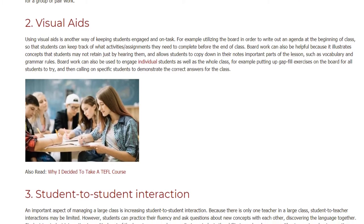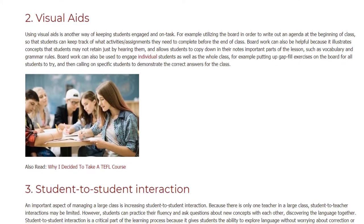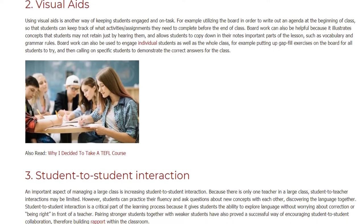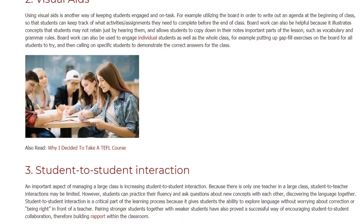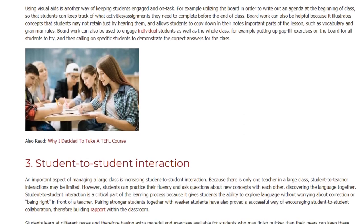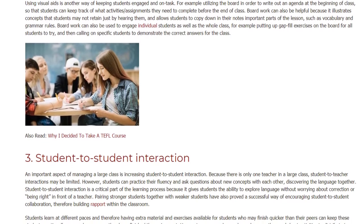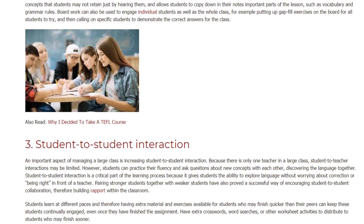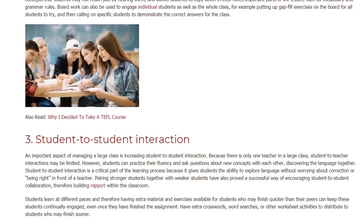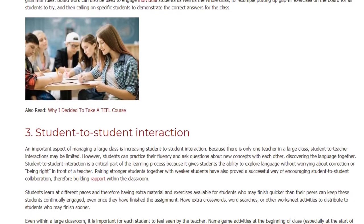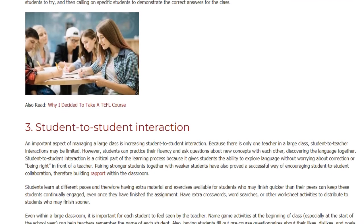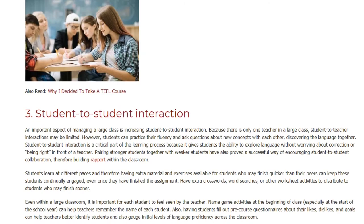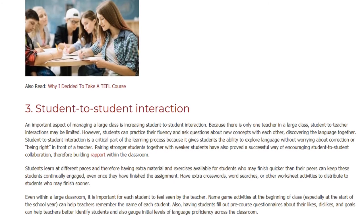An important aspect of managing a large class is increasing student-to-student interaction. Because there is only one teacher, student-to-teacher interactions may be limited; however, students can practice their fluency and ask questions about new concepts with each other, discovering the language together. Student-to-student interaction is critical because it gives students the ability to explore language without worrying about correction in front of a teacher. Pairing stronger students with weaker students has also proved a successful way of encouraging collaboration and building rapport. Having extra material available for students who finish quicker than their peers can keep these students continually engaged.